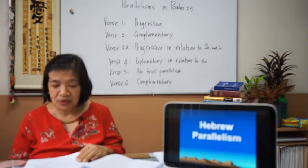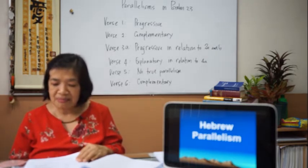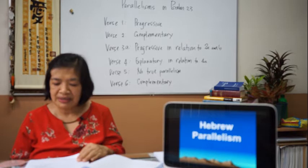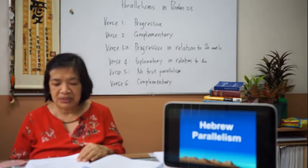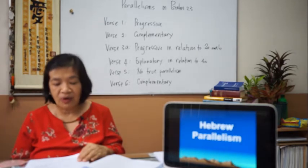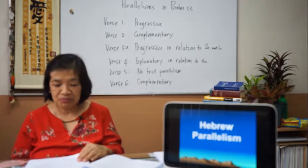Letter E is contrastive parallelism: the second line makes a statement that contrasts with the first. 'The way of a fool seems right to him, but a wise man listens to advice.' The conjunction is translated as 'but,' not 'and' — there is a clear contrast.